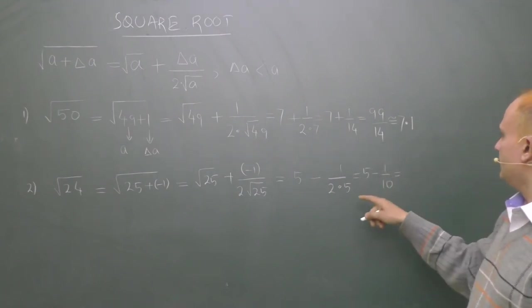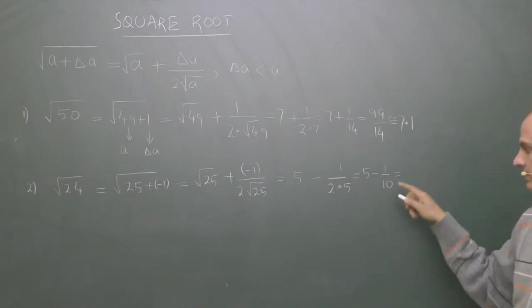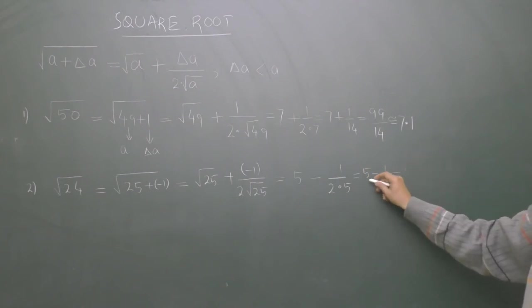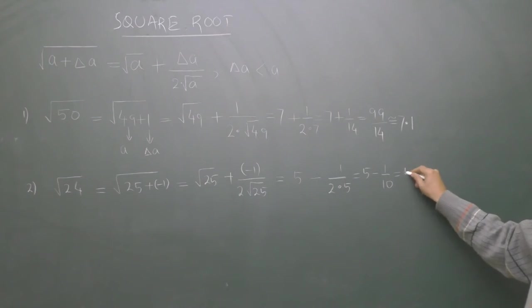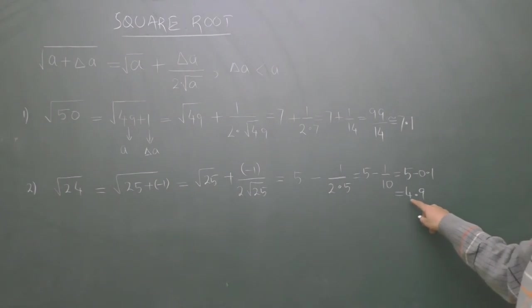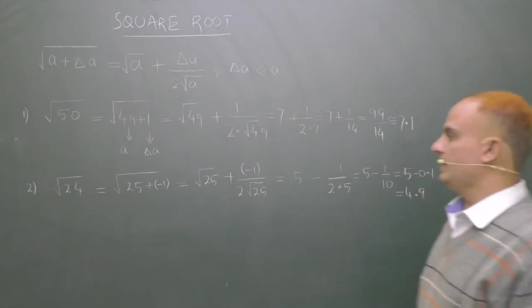5 minus 1 upon 10. 1 upon 10 is well known to you, that 1 by 10 is 0.1. So 5 minus 0.1, or you can take LCM. 5 minus 0.1 is 4.9. So square root of 24 is approximately equal to 4.9.